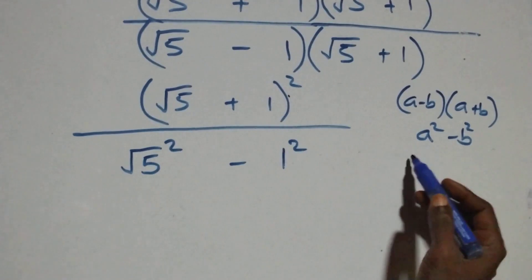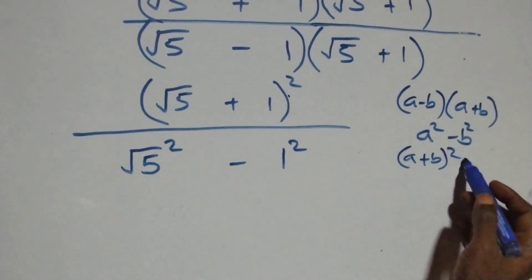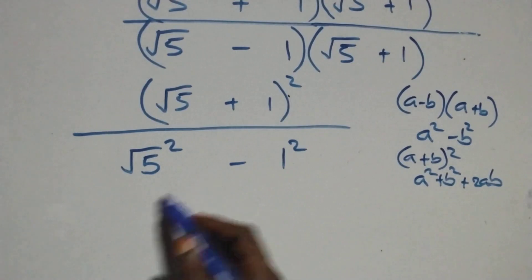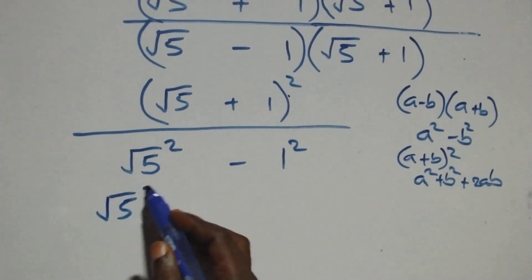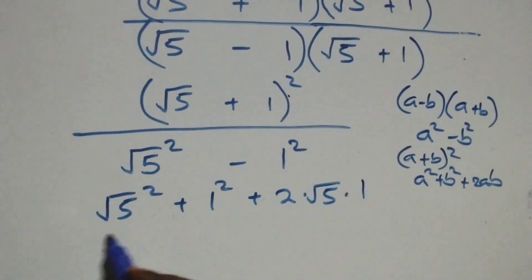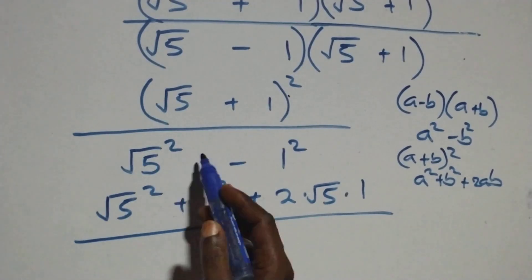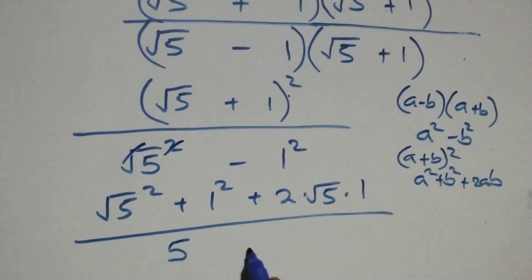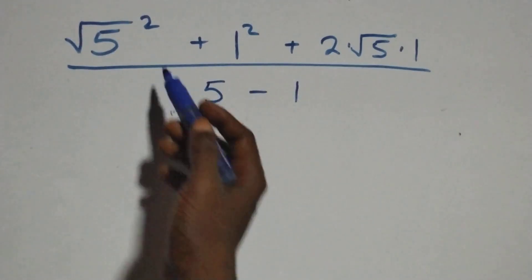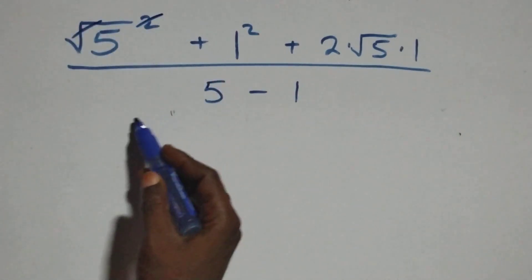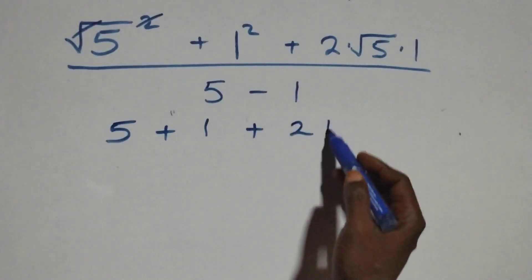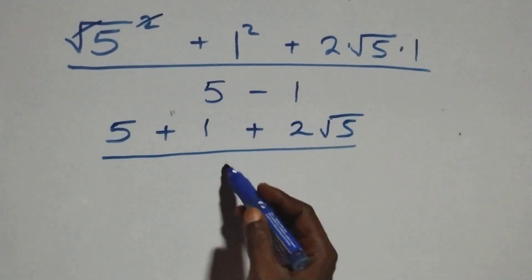The expansion of (a + b)² equals a² + b² + 2ab. So the numerator becomes root five squared plus one squared plus two times root five times one. The denominator: root five squared gives five, minus one squared gives one.